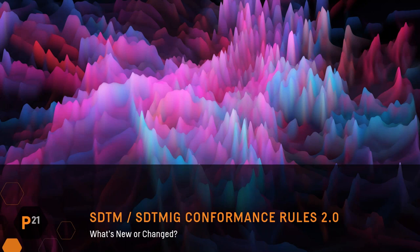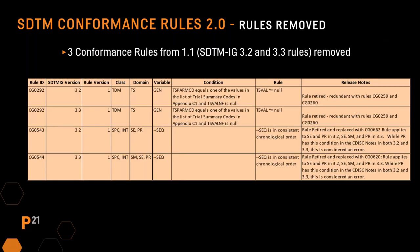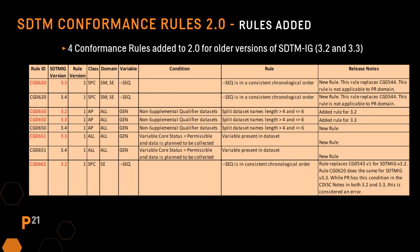With new releases of CDISC standards and implementation guides, we get new releases of conformance rules as well. There were three conformance rules removed from previous IG versions — previously assigned to SDTM IG 3.2 or 3.3 — in this new release. One rule, CG0292, is redundant with other rules. The other two were retired because new rules were created to replace them. There were also four rules added for SDTM IG versions 3.2 and 3.3, most added for SDTM IG 3.4 and then applied to older versions as well.